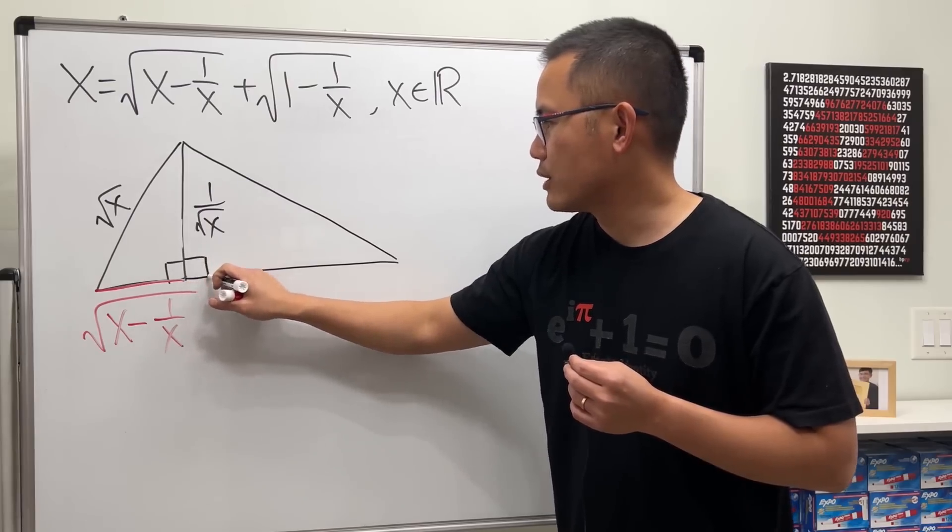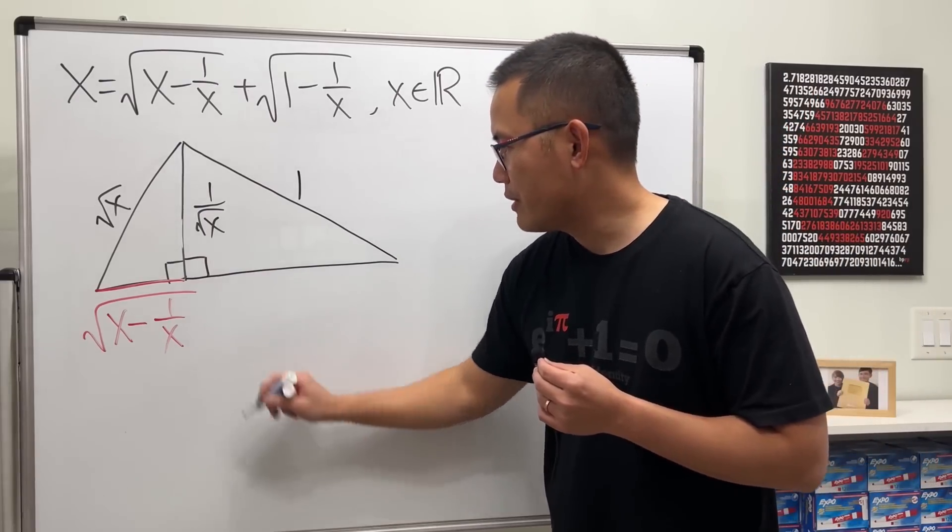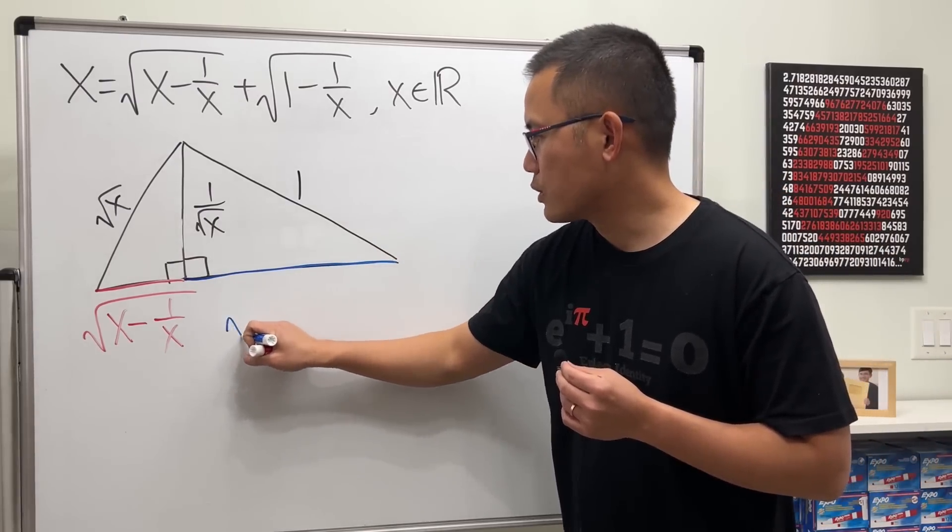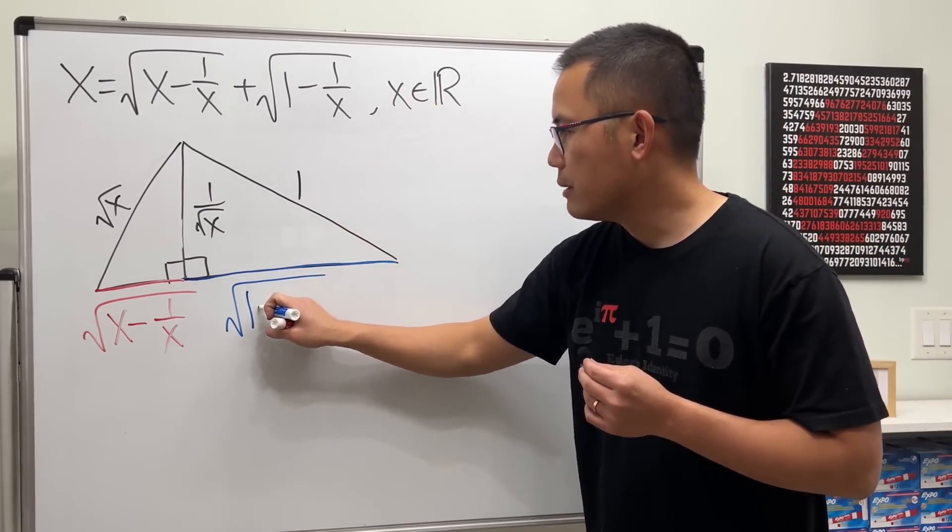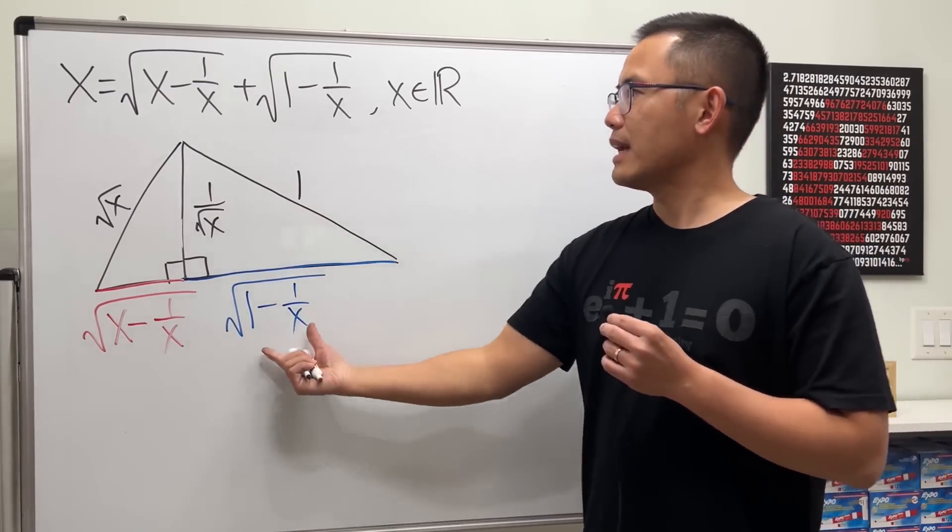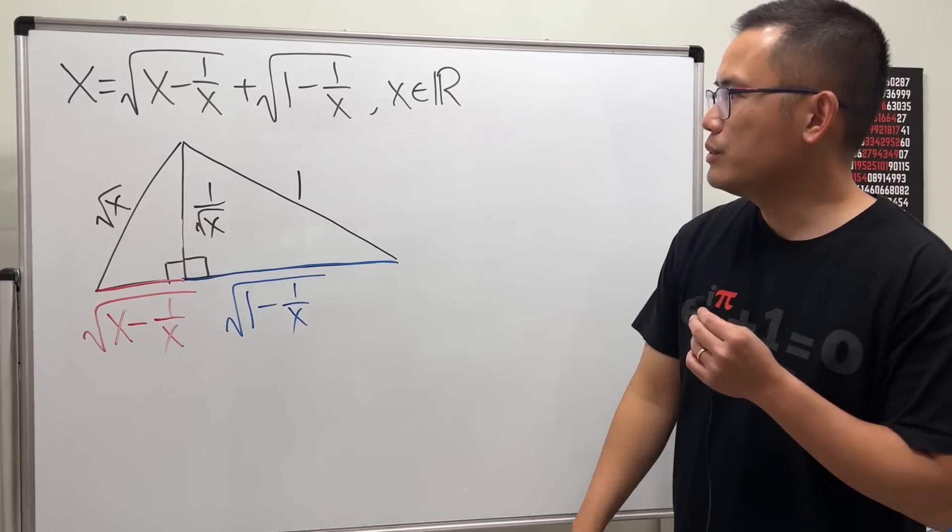Now let's do the same thing. This side here is just going to be the square root of the hypotenuse squared, which is just 1, minus this thing squared, which is 1/x. That's that. Now what the question wants to do is we want to have this plus that equals x.